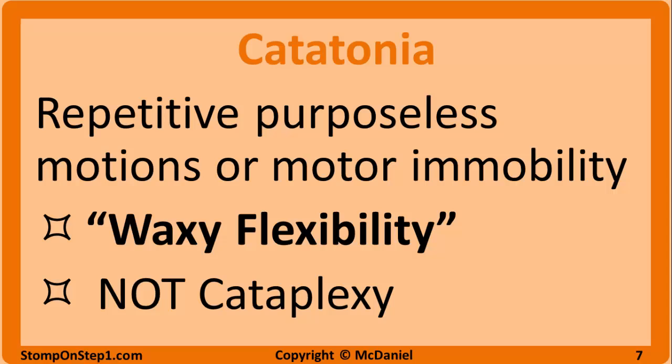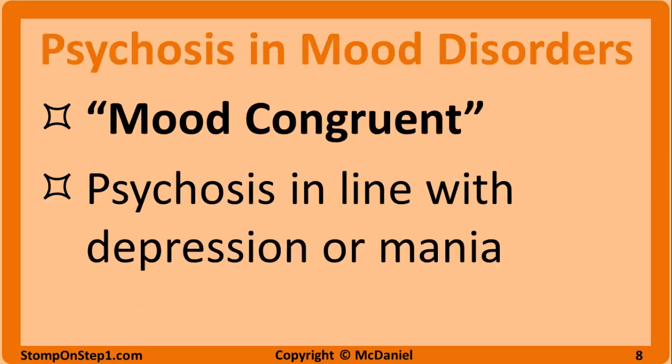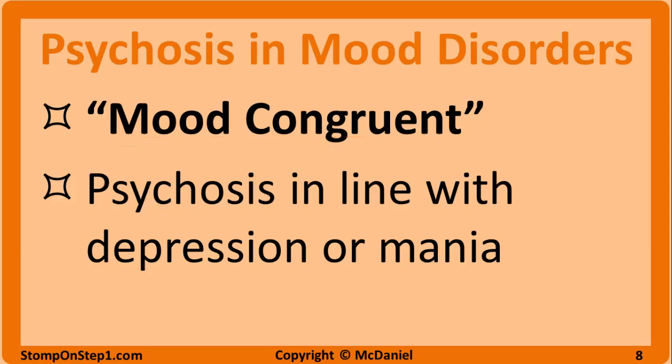A catatonic state should not be confused with cataplexy, which is a type of narcolepsy where people have motor immobility while remaining completely aware of their surroundings. In the previous video in the psychiatry section, we covered mood disorders, including mania with psychosis and depression with psychosis. The key difference between schizophrenia and a mood disorder with psychosis is that psychosis in mood disorders is mood congruent — present only during mood episodes and in line with their mood. So a manic individual may have delusions of grandeur and a depressed individual might have delusions of guilt.